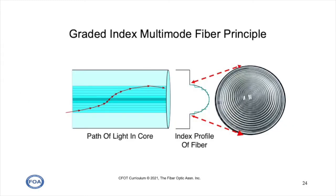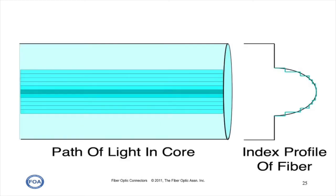Graded index multi-mode fiber has a core that has different indices of refraction that get lower as you get to the outside of the core. It's a bit like a Fresnel lens, if you know what that is—those big glass serrated lenses they use in things like lighthouses.